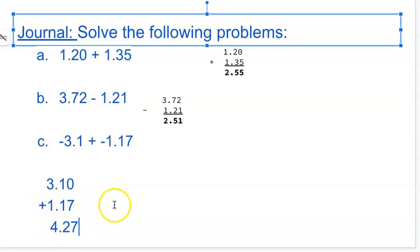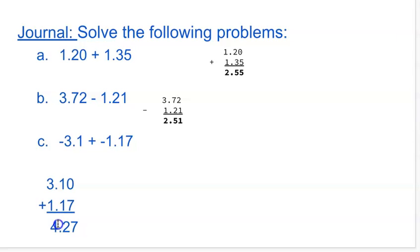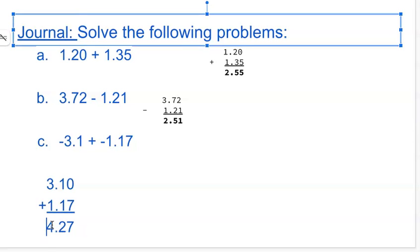The only problem with going like a sentence, going from left to right, is if you have to carry a number over, you could end up getting it wrong. That's just a little piece of information. And then we add our negative because both of them are negative. So it's negative 4.27. And that looks like that is it.